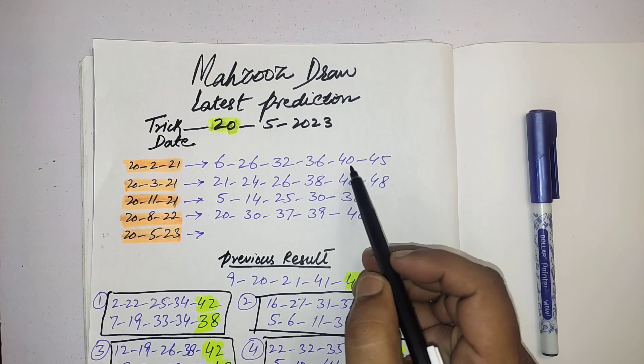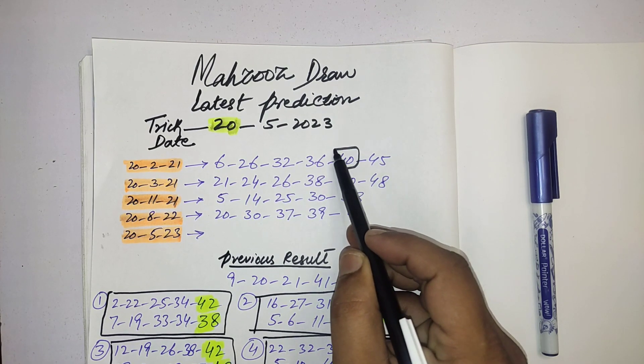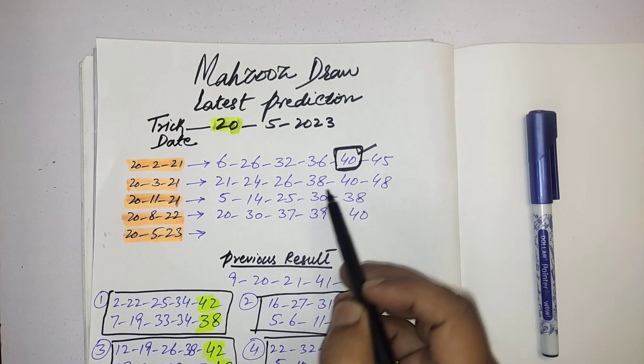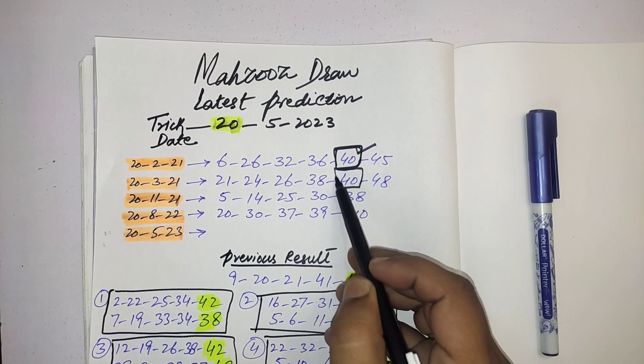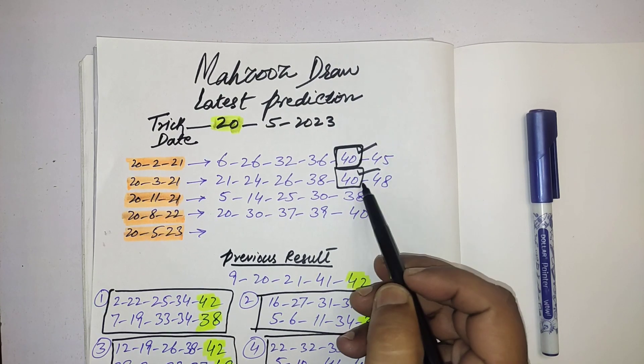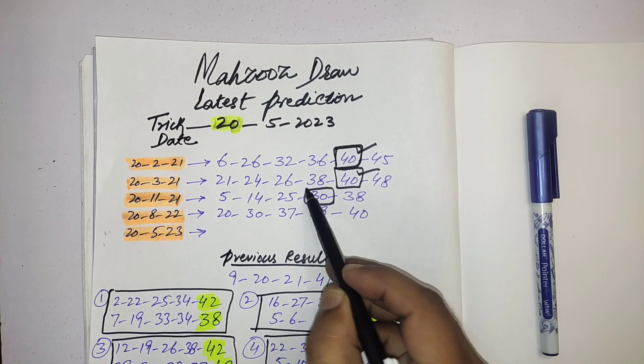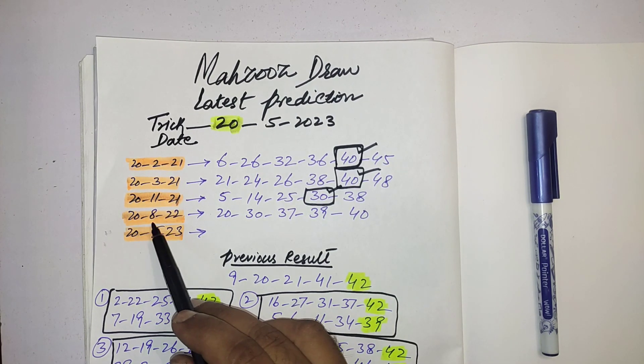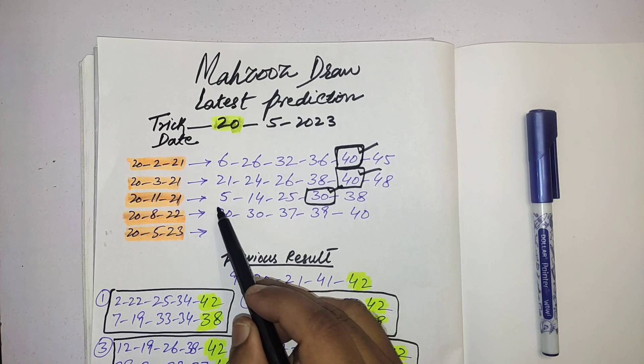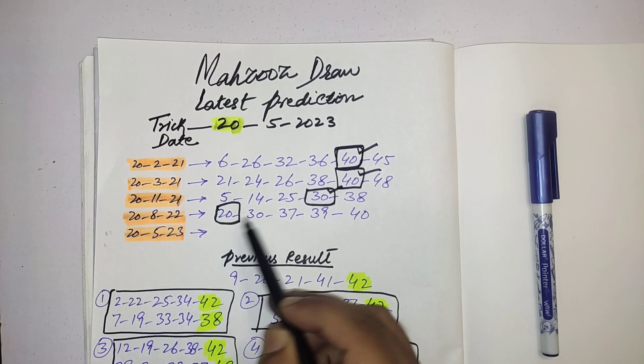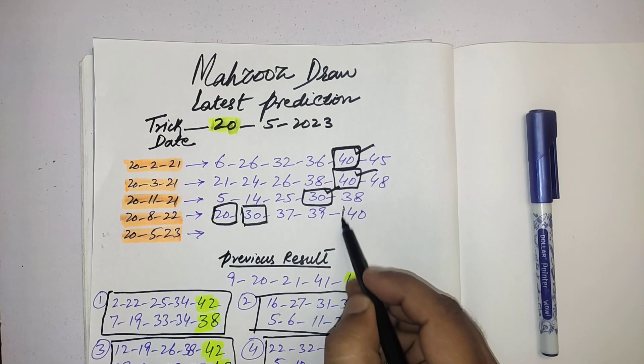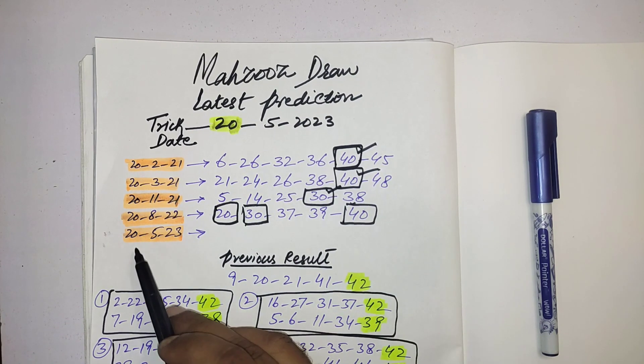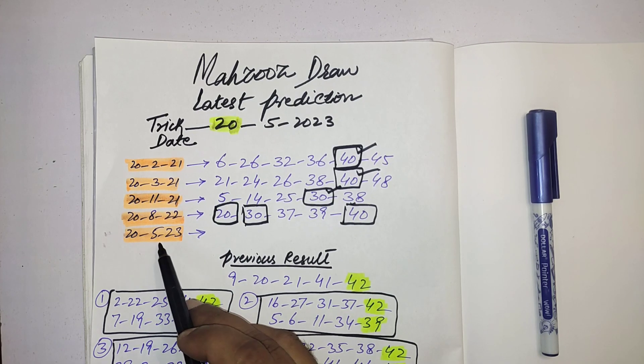When draw was drawn on this date, you can see they must pick the number with zero. In first draw 40, in second draw again 40, in third draw 30, and last 28th August 2022 you can see three numbers they picked with zero: 20, 30, and 40. So according to the past history of this date, our upcoming draw 20th May...